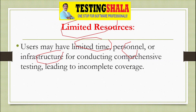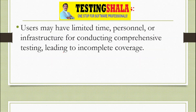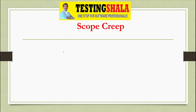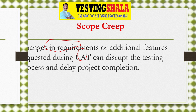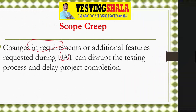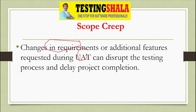The next challenge is scope creep, where requirements are changed frequently or additional features are added into the software. This can impact UAT, abruptly stop it, or cause it to restart, ultimately delaying the overall project completion.